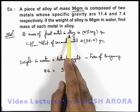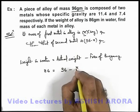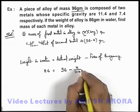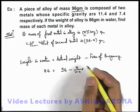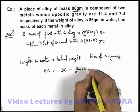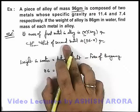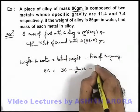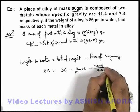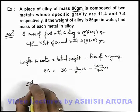For the first metal, its mass is x, then its volume can be written as x divided by its specific gravity, 11.4, multiplied by specific gravity for water, which is relative density only, so it can be taken as 1, minus 96 minus x by 7.4 into 1. Now for this expression, if we solve, we can directly write solving we get...